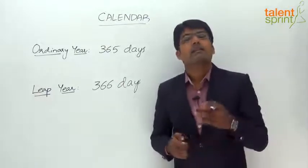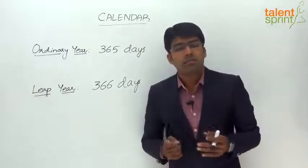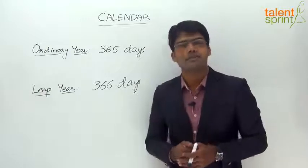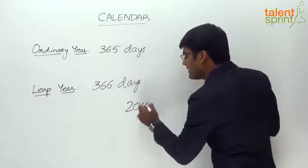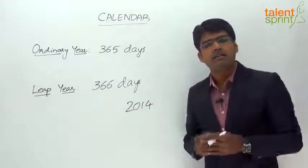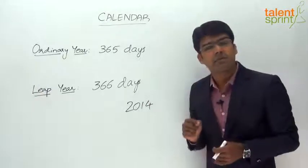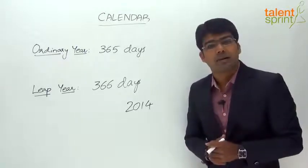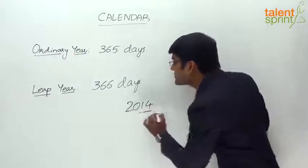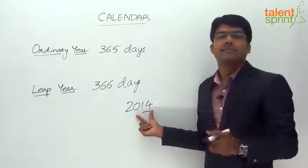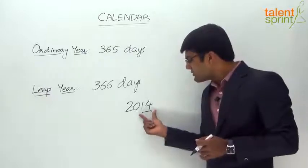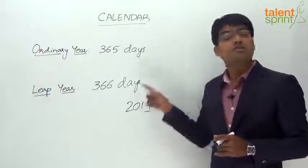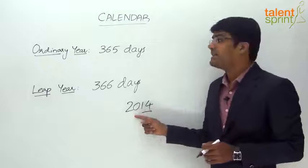How do we decide whether a given year is ordinary or a leap year? If the given year is divisible by 4, it is a leap year; if not, it is an ordinary year. For example, 2014: the last two digits are 14, and 14 is not divisible by 4, so 2014 is an ordinary year. Similarly, 2015 is not a leap year. But 2016 — the last two digits are 16, which is divisible by 4 — so 2016 is a leap year.